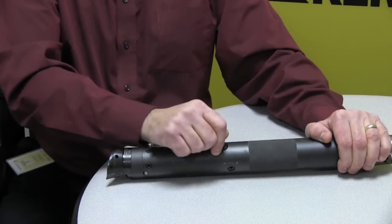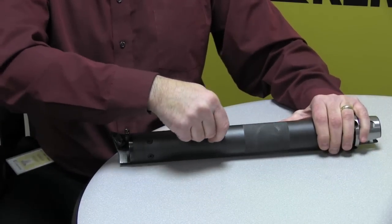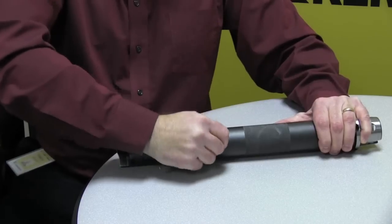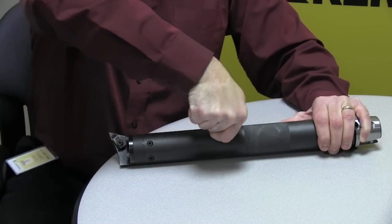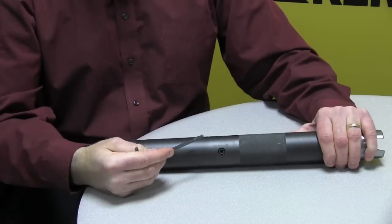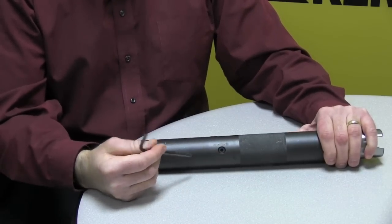So the first thing we do, loosen our two lock screws. Now you'll see, I showed before the negative and positive sign.